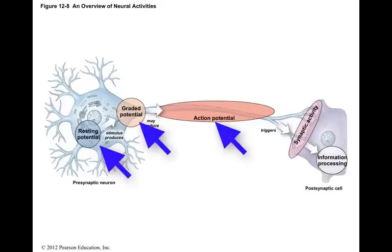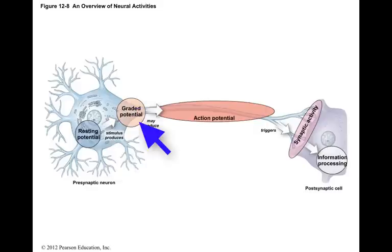A resting potential is the transmembrane potential of a resting cell. A change in the resting potential of a neuron would initiate neural activity. A graded potential is when a stimulus produces a temporary but localized change in the resting potential. The effect of this change will decrease with distance from the stimulus.